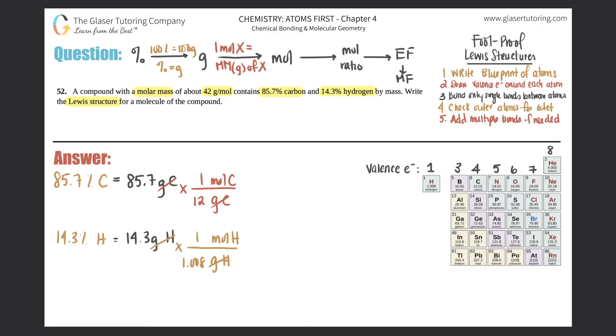So now let's just do the math. So in this case, we'll do 85.7 divided by 12. And let me just put 12.01 because that's what the periodic table says. But if you say that this is 7.14 moles of carbon, and then if I do the bottom, I think you get 14.2. Yep. 14.2 for hydrogen.